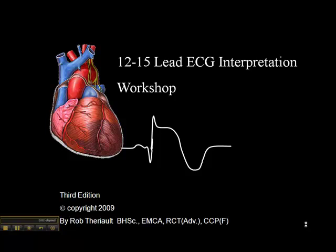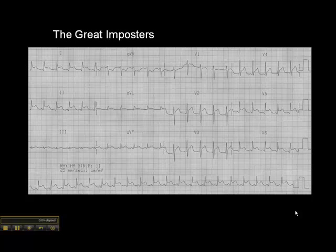This next one is imposter number two, and we'll go through it sequentially again. We see ST elevation in lead two, not in three, but we do see ST elevation in AVF. Nothing in V1, but we have ST elevation in V2, V3, V4, V5, V6, lead one, and very subtle, but in AVL as well.